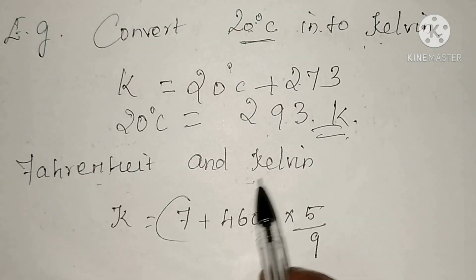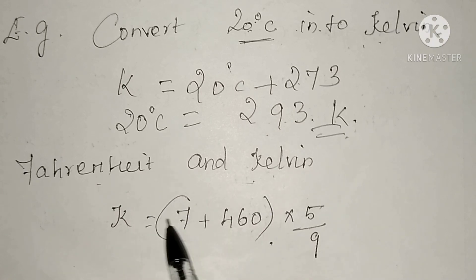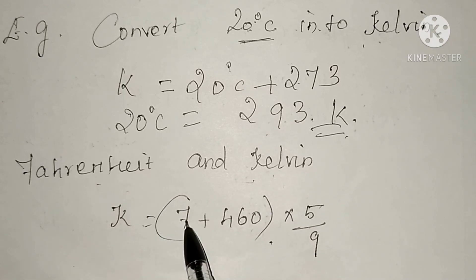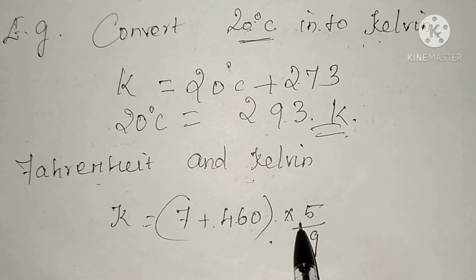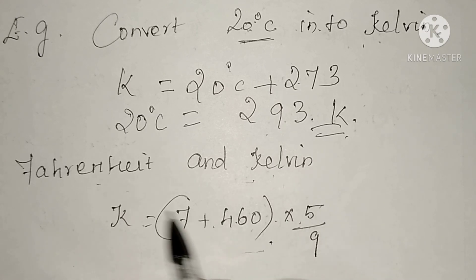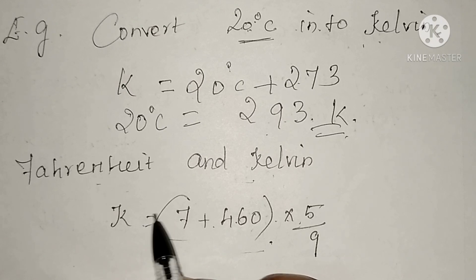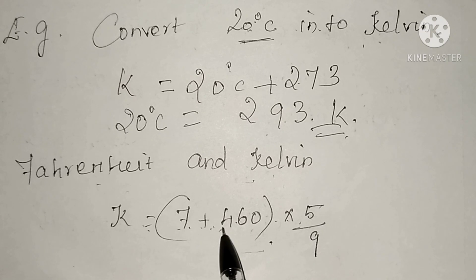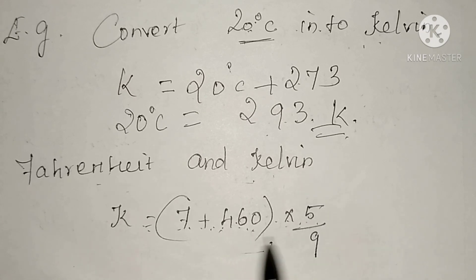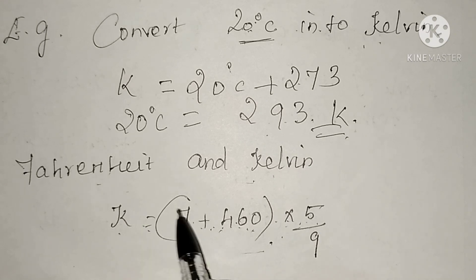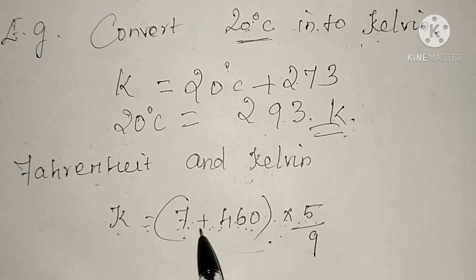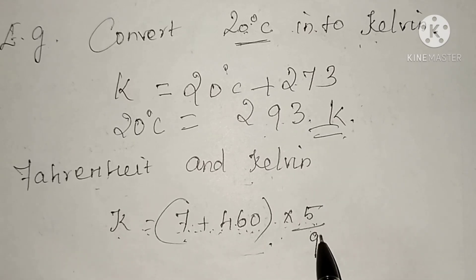The relation between Fahrenheit and Kelvin is: K = (F + 460) × 5/9. This formula will be asked in one-word questions. Please learn this formula: K = (F + 460) × 5/9.